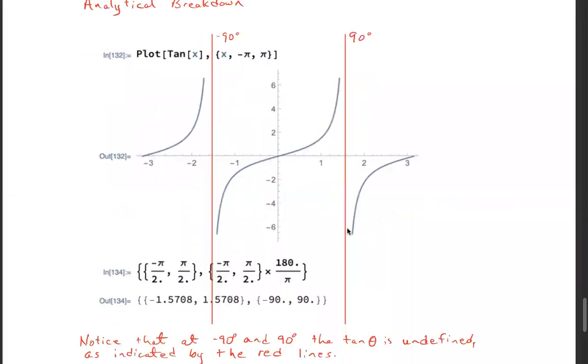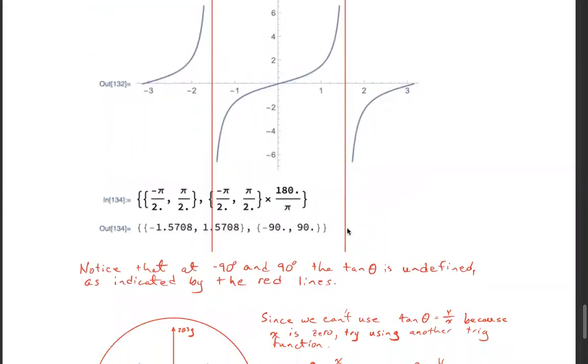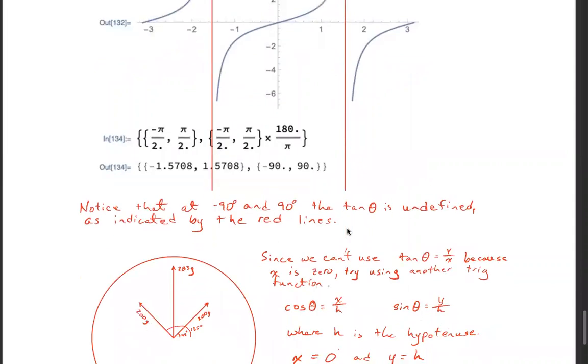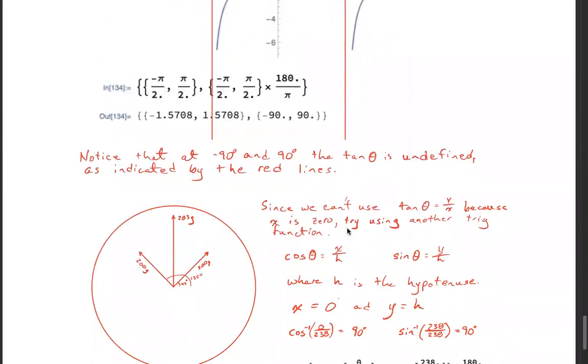So notice that at minus 90 and 90, the tangent theta is undefined, as indicated by the red lines. You see here's 200 grams at 45 and 200 grams at 135. Since we can't use tangent, y over x, because x is zero, try using another trig function.